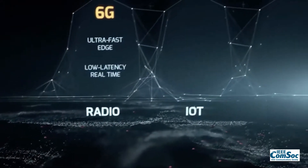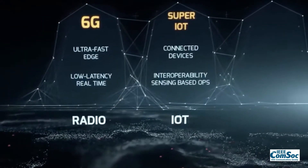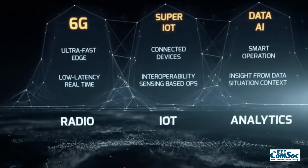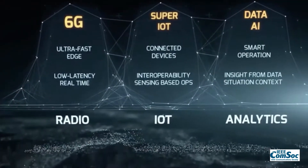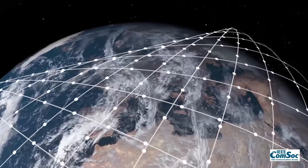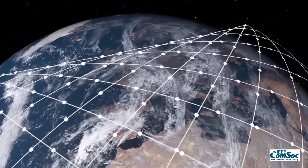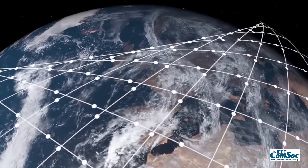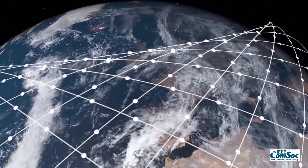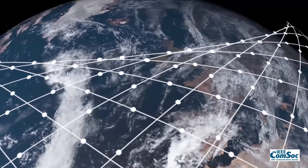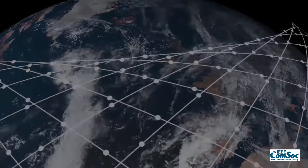As 5G technology is gaining maturity and funding commercial applications, research on 6G is on the way. To realize the global coverage in 6G systems, satellites are important components, including the GEO satellites, MEO satellites, and LEO satellites.